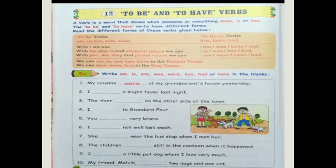A verb is a word that shows what someone or something does, is, or has. The to be and to have verbs have different forms.